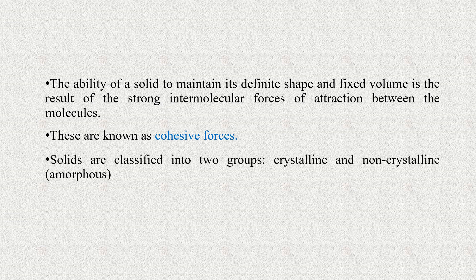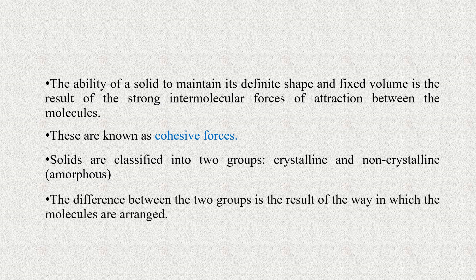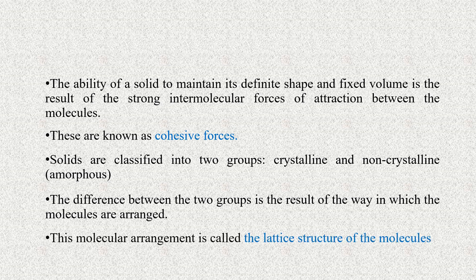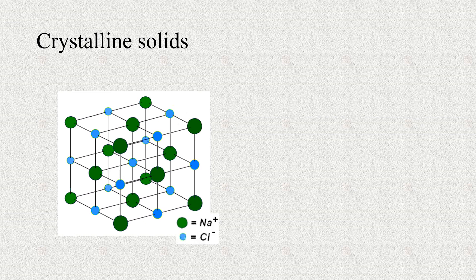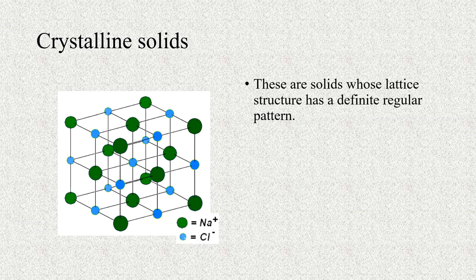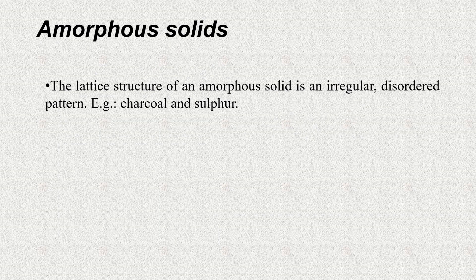Solids are classified into two groups: crystalline and non-crystalline (amorphous). The difference between the two groups is the result of the way in which the molecules are arranged, called the lattice structure. Crystalline solids have a definite regular pattern, e.g., sodium chloride and rock salt. Amorphous solids have an irregular, disordered pattern, e.g., charcoal and sulfur.